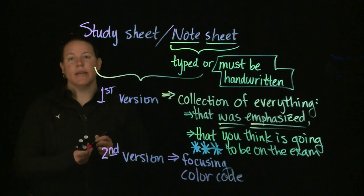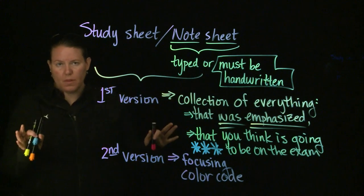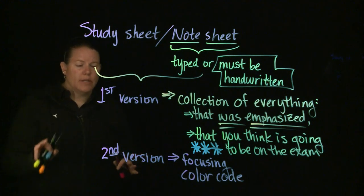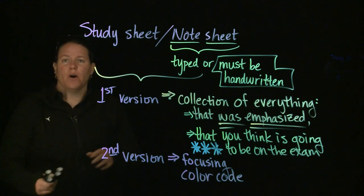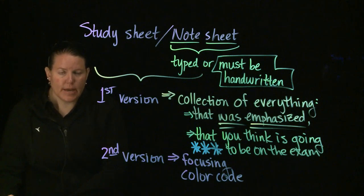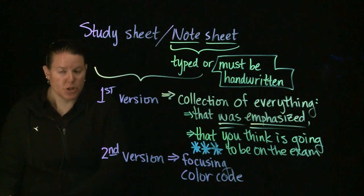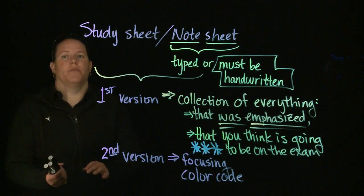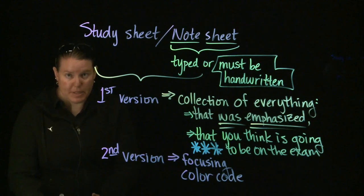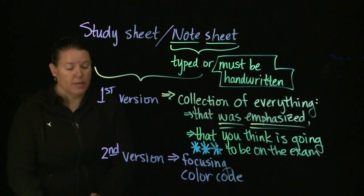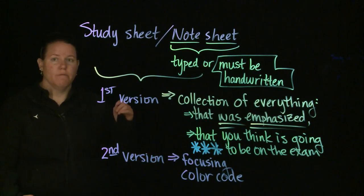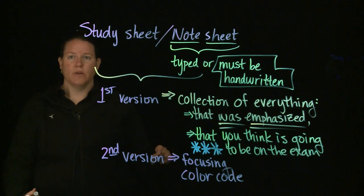So for instance, in chemistry, because that's what I teach. In chemistry, you would put all the similar information together in the same color. So if we're talking about gases, everything that goes along with gases should be in the same color. Everything that talks about thermodynamics should be in the same color. Makes some sense, right? So the second version focuses the information and it color codes it.